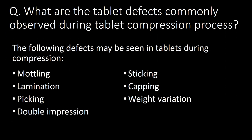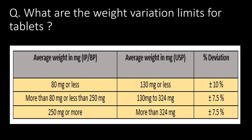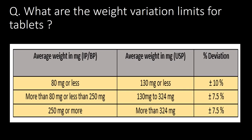What are the tablet defects commonly observed during tablet compression? The following defects may be seen during the compression process: mottling, lamination, picking, double impressions, sticking, capping, and weight variation. For weight variation limits, you can refer to the table below as per IP, BP, and USP standards.